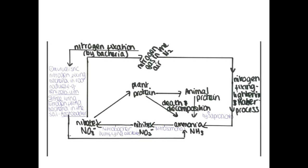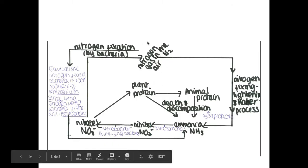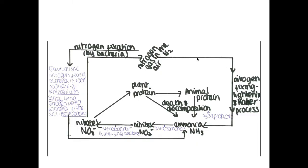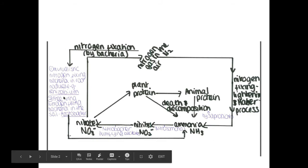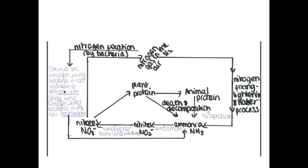So the nitrogen cycle, we have a large percentage of nitrogen gas within the air. This can be fixed into ammonia by two ways, through nitrogen fixing in the lightning or the Haber process or nitrogen fixation by bacteria. And there are two bacteria here we need to know. Rhizobium, which are in the root nodules of some plants like peas, or free-living nitrogen fixing bacteria in the soil such as Azobacter.